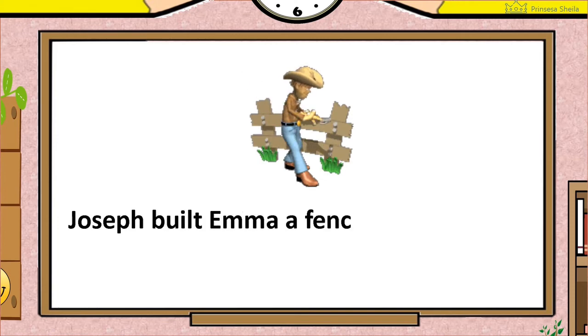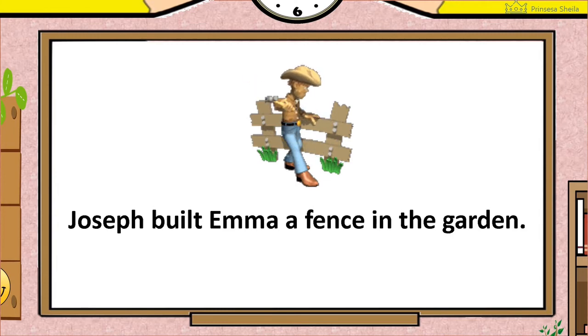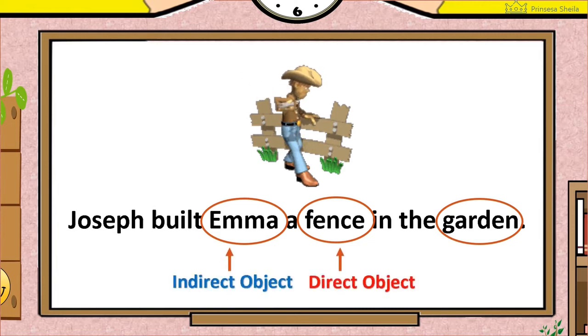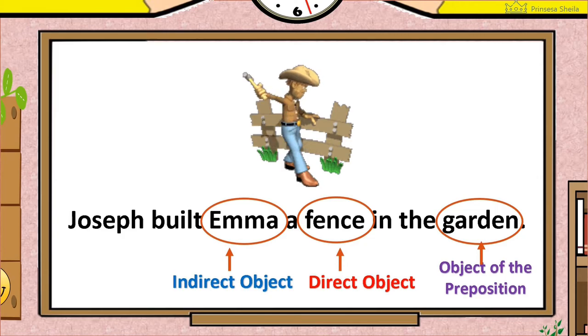Now, let's try to identify the objects in this sentence. Joseph built Emma a fence in the garden. Can you identify them? The objects in this sentence are Emma, fence, and garden. Can you tell their type? Emma is the indirect object. Fence is the direct object. And garden is the object of the preposition.